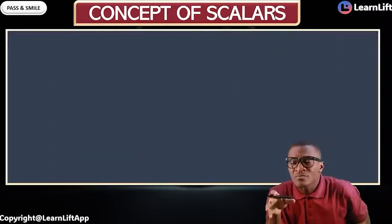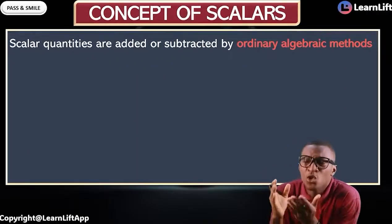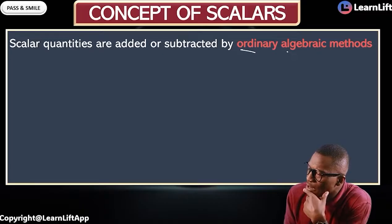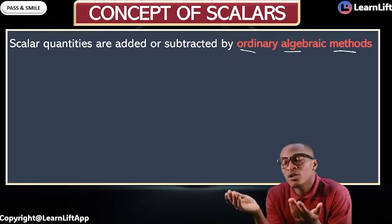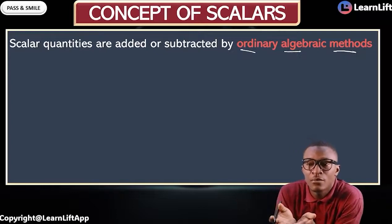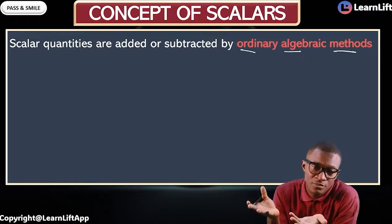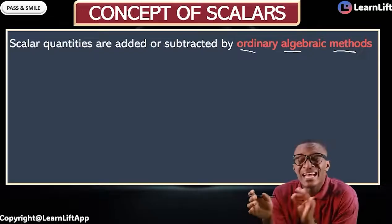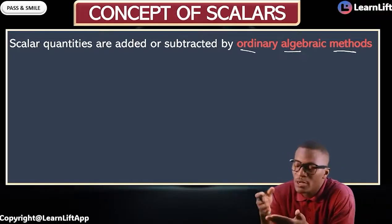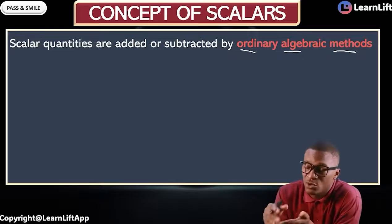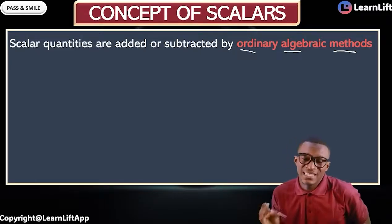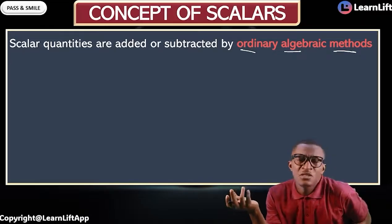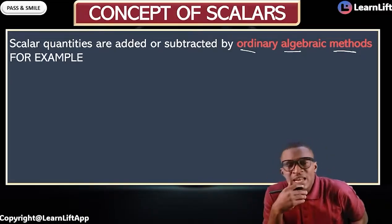Scalars are added or subtracted by ordinary or algebraic method — simply adding or subtracting them with no additional rules. But when we get to vectors, it is not so. Vectors are added or subtracted by geometric means, such as Pythagoras' theorem, cosine rule, and the rest. So scalars are added or subtracted by ordinary algebraic method.